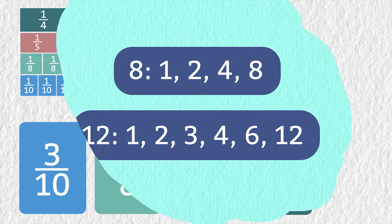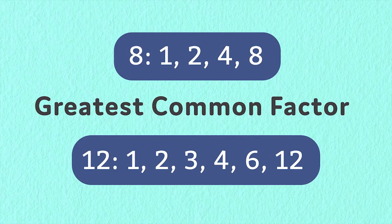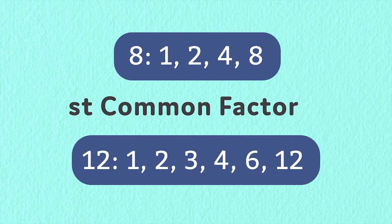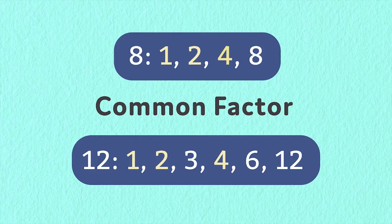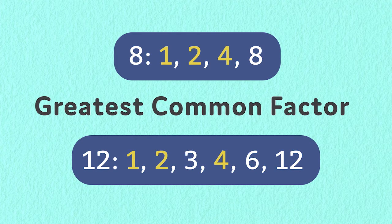You can reduce a fraction to its simplest form by finding the greatest common factor of the numerator and the denominator. Common factors of two numbers are factors that are the same for both numbers. The greatest common factor is the largest number that is a factor of both.